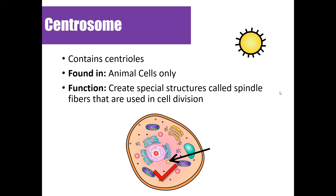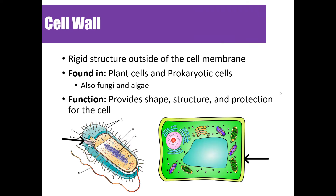The centrosome is made of microtubules. Two centrioles together make the centrosome. Centrioles appear during cell division and help pull chromosomes apart. They are found only in animal cells. Plants have a similar structure that helps pull their chromosomes apart during cell division, but they're not called centrioles.